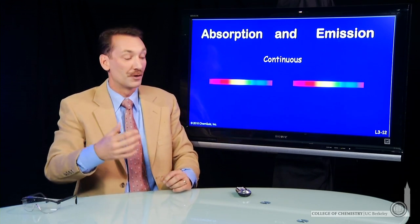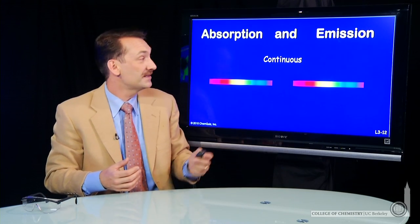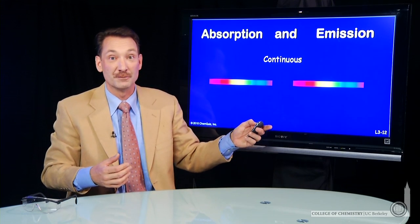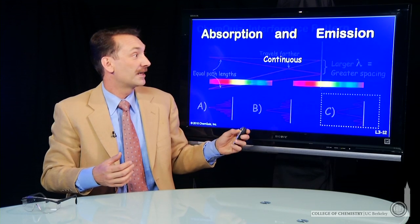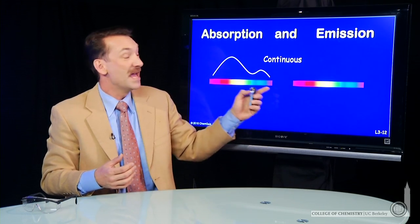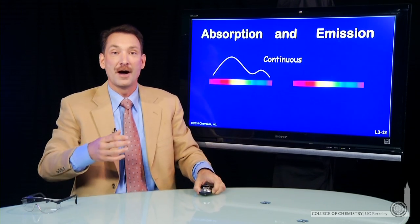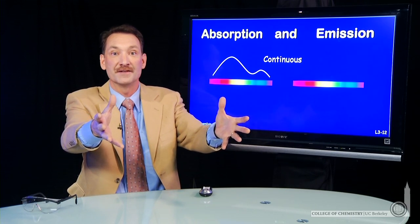So let's talk about absorption and emission. It can happen in many different ways. You can have a continuous absorption, so a continuous absorption of many wavelengths, a band of wavelengths, different colors hitting you all at once.